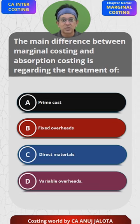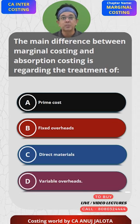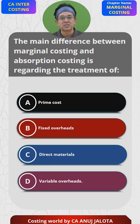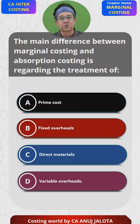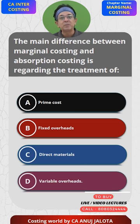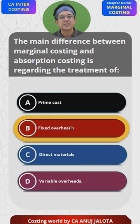Therefore, Absorption Costing says that fixed overheads should be treated as a product cost, whereas Marginal Costing says it should be treated as a period cost. So the answer is B — that is the correct answer.